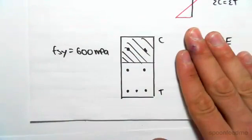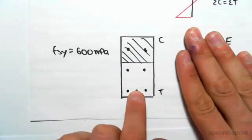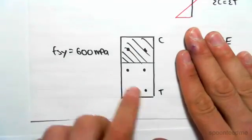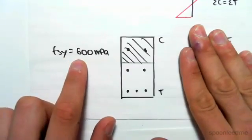We have three layers of steel. Now, because most of the steel is at the bottom here, that's going to be where the tensile steel is, because we need more steel for tension, and the compressive will be at the top. We're also going to say that our yield stress of steel is 600 MPa.